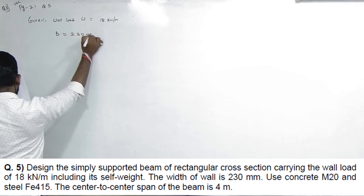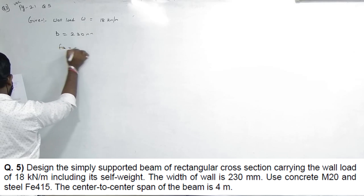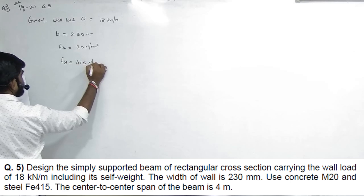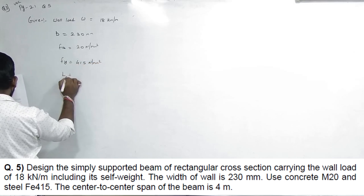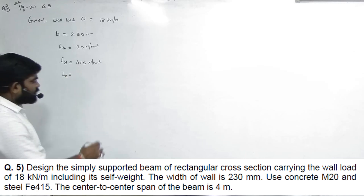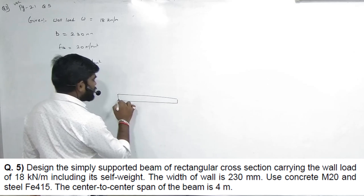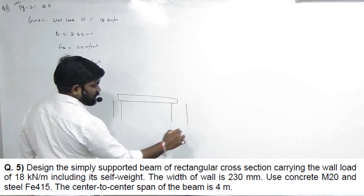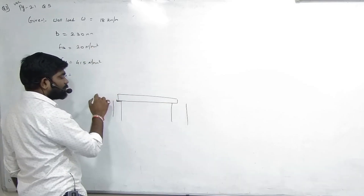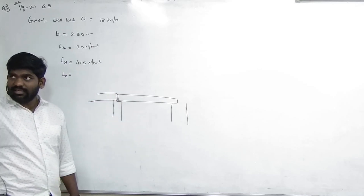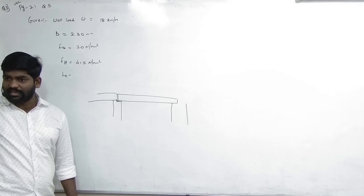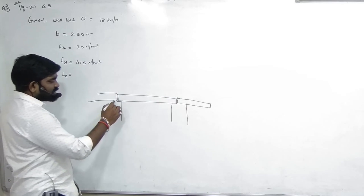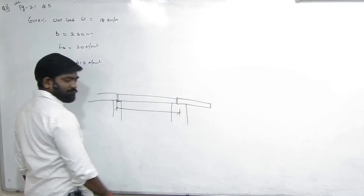B = 230 mm, FCK = 20 N/mm², FY = 415 N/mm². Beam effective span center to center = 4 meters. Effective span aur clear span ka concept: jitna wall thickness ho uska half leke effective span calculate karte hain dono side se.